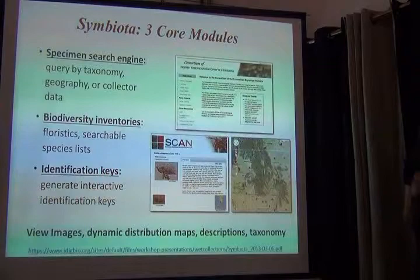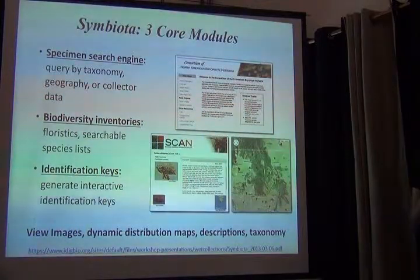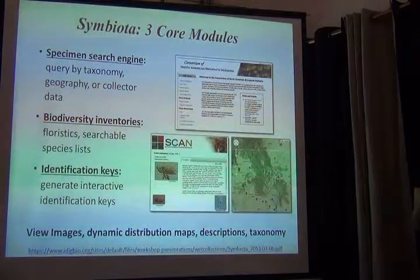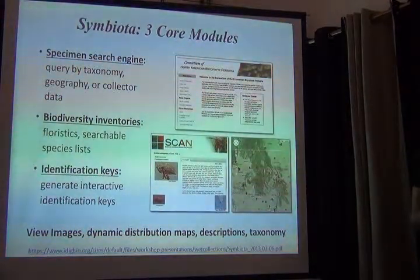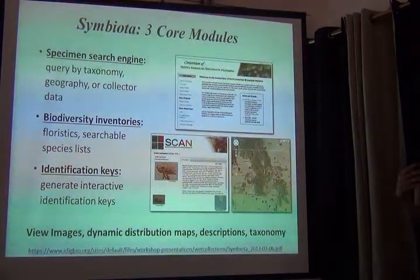Any end user who goes to a Symbiota portal will be able to access the underlying specimen database in three ways. The first is simply to access the database — they can query it for every bit of collection information they might be interested in searching, be it collector, geography, taxonomy, etc. — and retrieve records that match those query parameters.